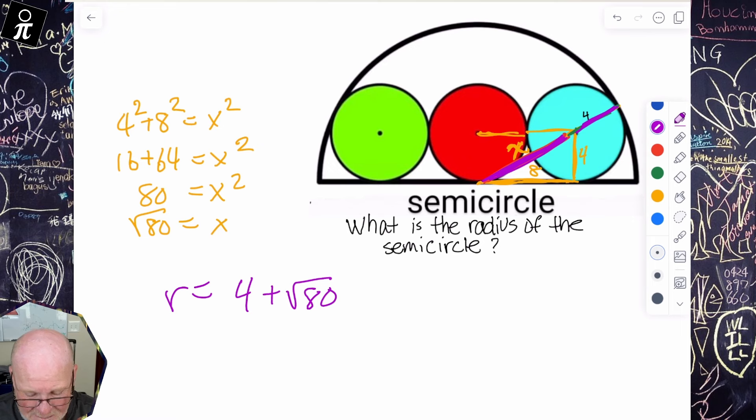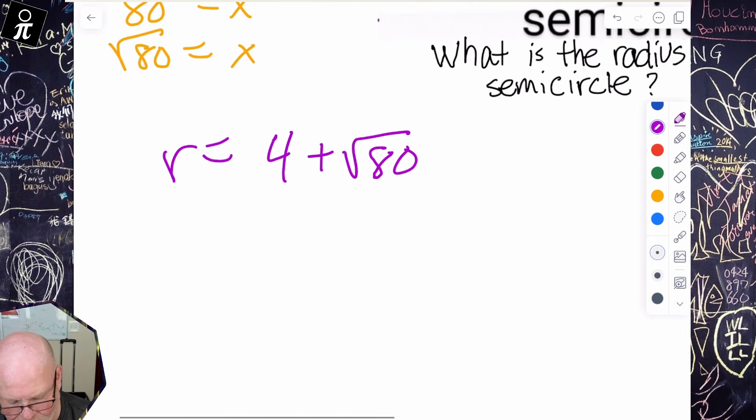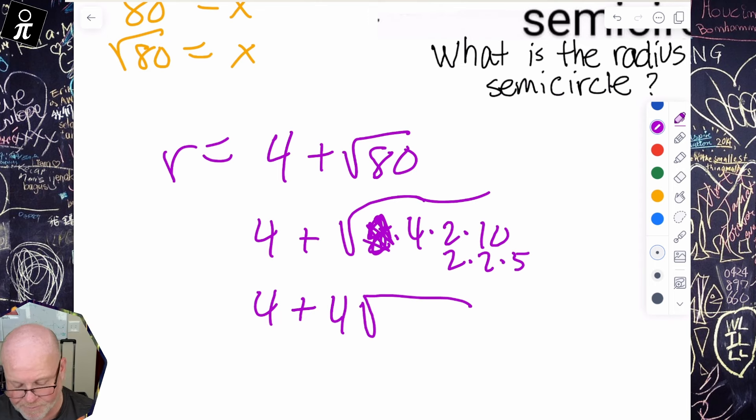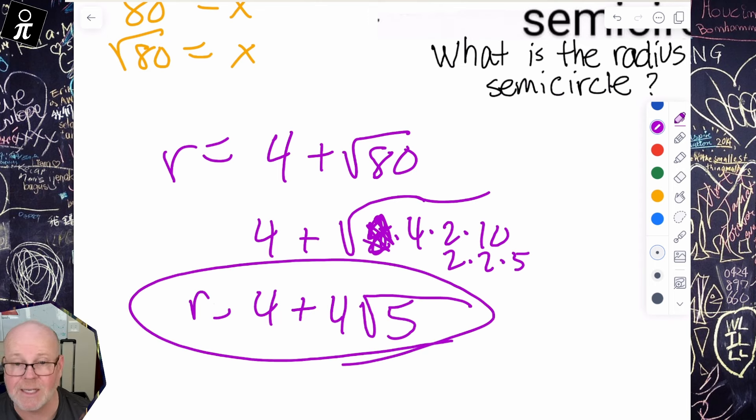Technically we're done, but if you want to simplify, we can simplify. What is 80? That's four times 10. No, that's eight times 10. That's actually four times two times 10. That's two times two times five. So there's a two, there's a two. So this equals four plus four times the root of five. And there is our radius: four plus four root five.